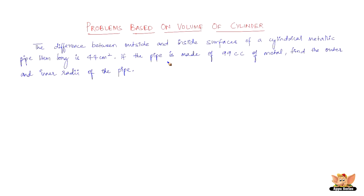Let us continue to solve problems based on volume of cylinder. The question says that the difference between the outside and inside surfaces of a cylindrical metal pipe — now as soon as a pipe comes into play, we are talking about hollow cylinders, so we have outside and inside surfaces. The pipe is 14 cm long, which is the height, and the difference is 44 cm².